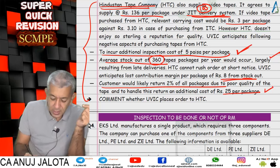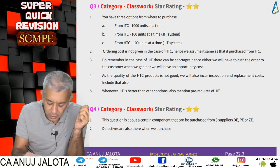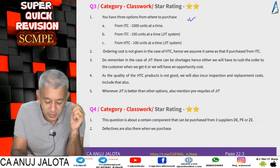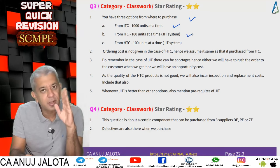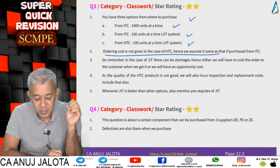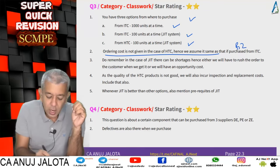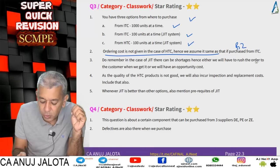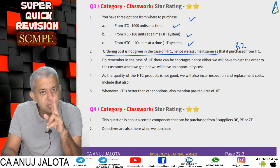So we have three options: purchase from ITC — 1000 units at a time; from ITC under JIT — 100 units at a time; and from HTC — 100 units at a time under JIT. The ordering cost is not given for HTC, so we assume rupees 2 per order. Under JIT there can be shortages — either we rush the order to the customer or there is an opportunity cost.